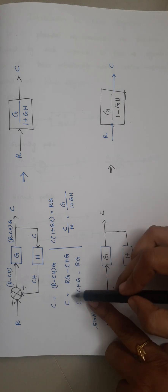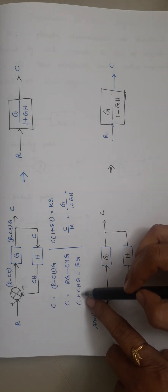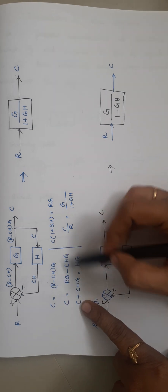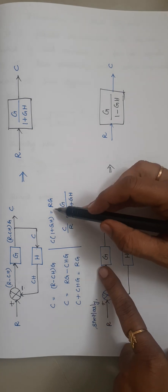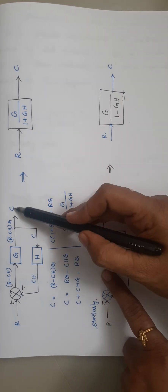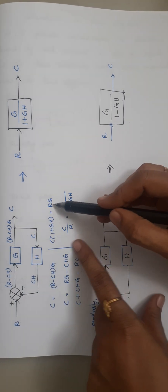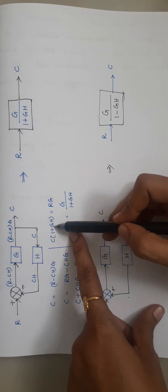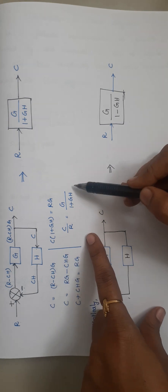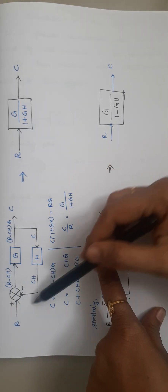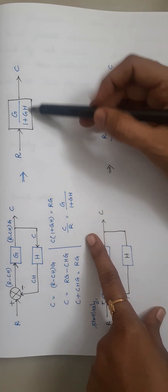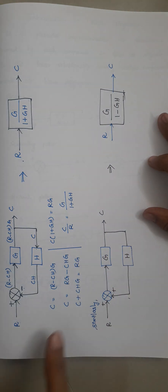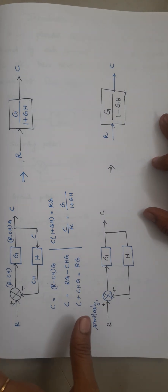Moving C·H·G to the left side: C + C·H·G = R·G. Taking C common: C·(1 + G·H) = R·G. Since we always need the ratio of output to input, C/R = G/(1 + G·H). So this negative feedback loop can be represented by a single block with value G/(1 + G·H), where R is the input and C is the output. This is the most important result everyone must know to solve block diagram problems.